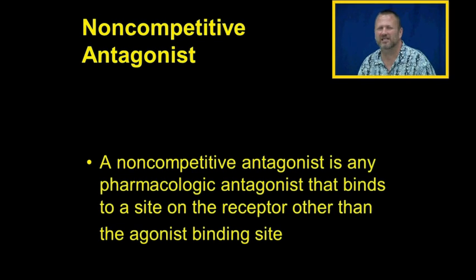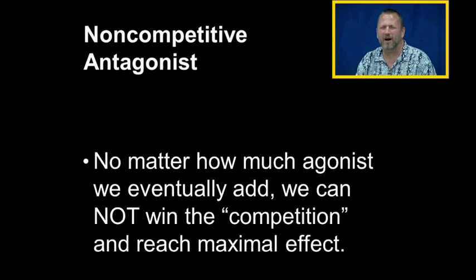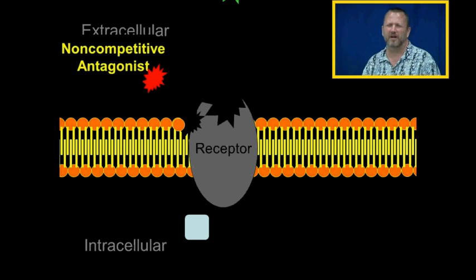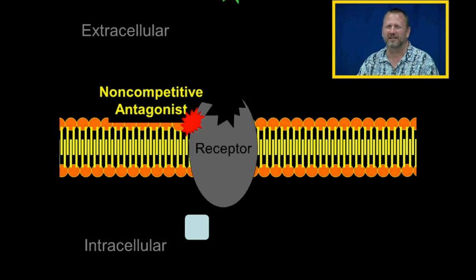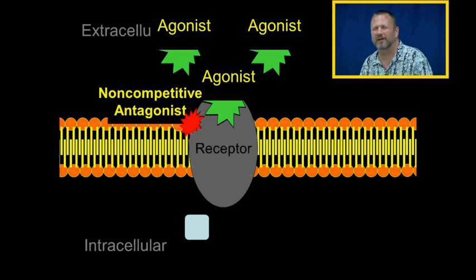A non-competitive antagonist is any pharmacologic antagonist that binds to a site on the receptor other than the agonist binding site. No matter how much agonist we add, we cannot reach maximal effect. The non-competitive antagonist binds to the receptor at a different location, and because it has deactivated the receptor, adding more agonist is not going to overcome the competition.